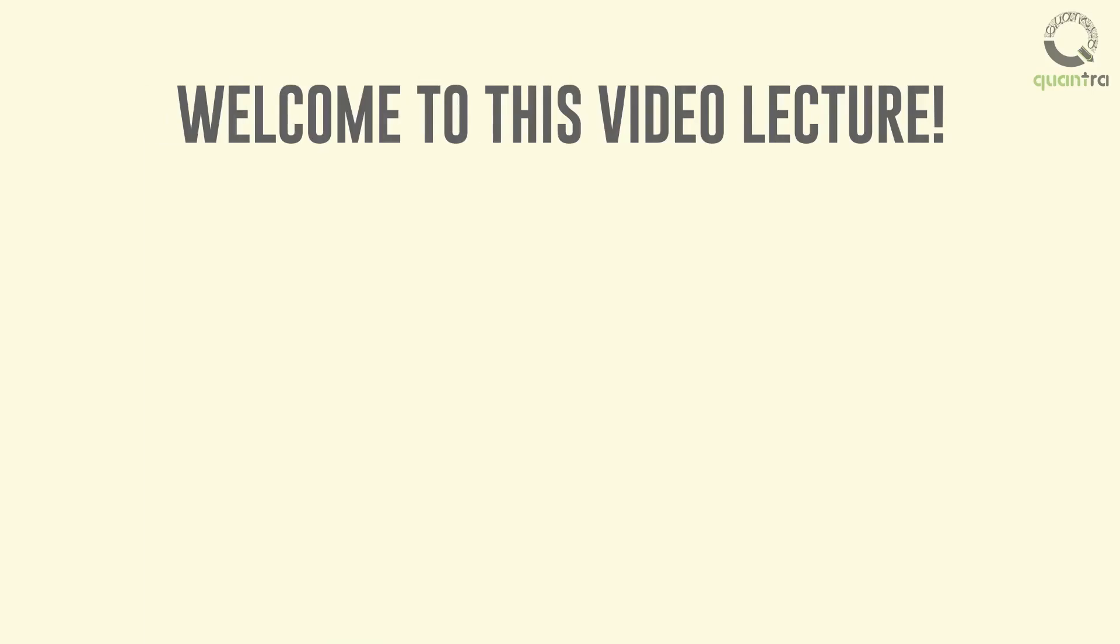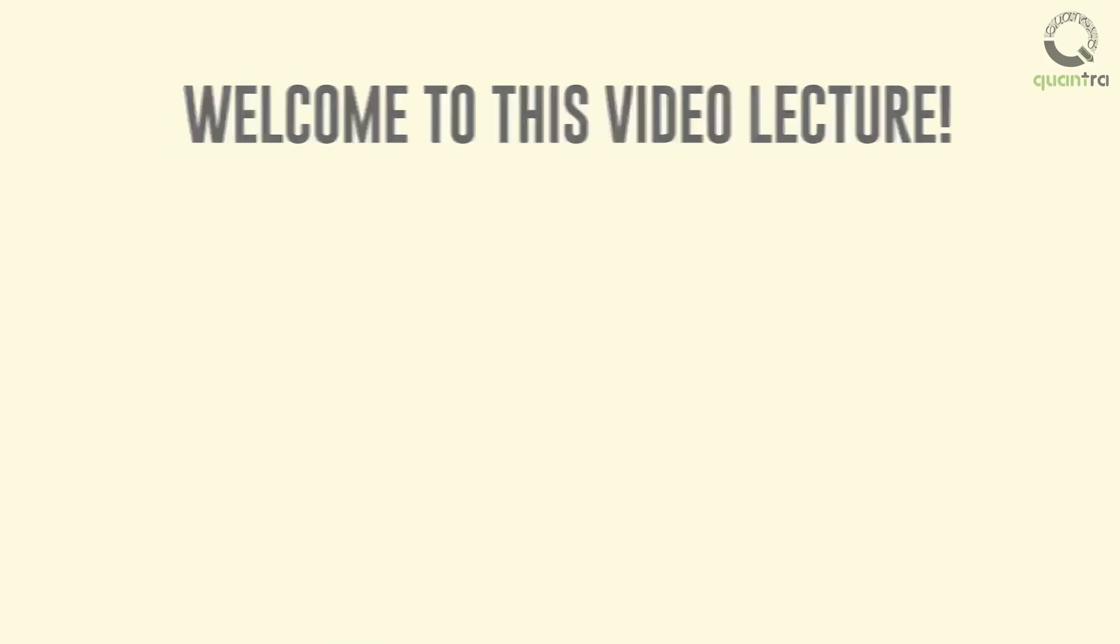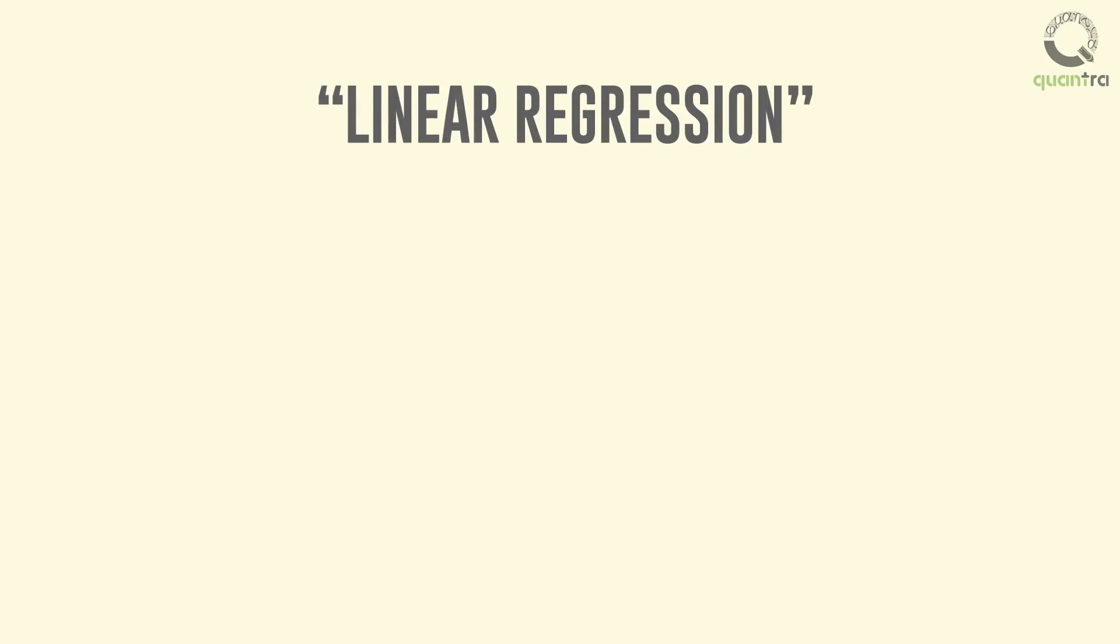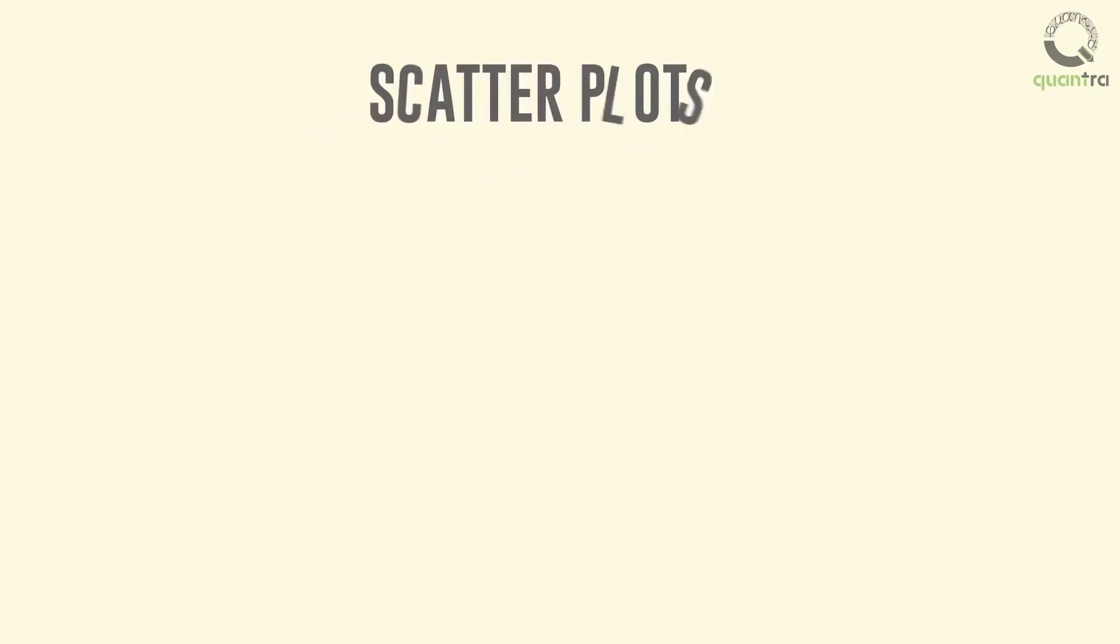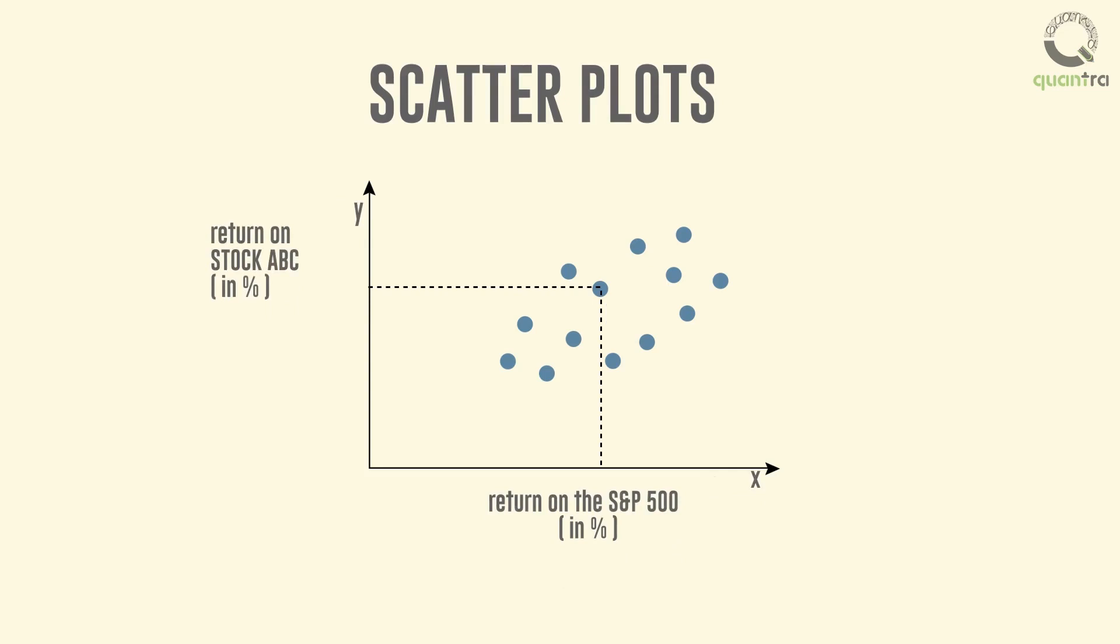Welcome to this video lecture. In this video we will understand linear regression. Let us begin with scatter plots. A scatter plot is a collection of points on a graph where each point represents the value of two variables, that is, an x-y pair. If we assume that x is the return on the S&P 500 index and y is the return on stock ABC, then graphically the plot will look like this.